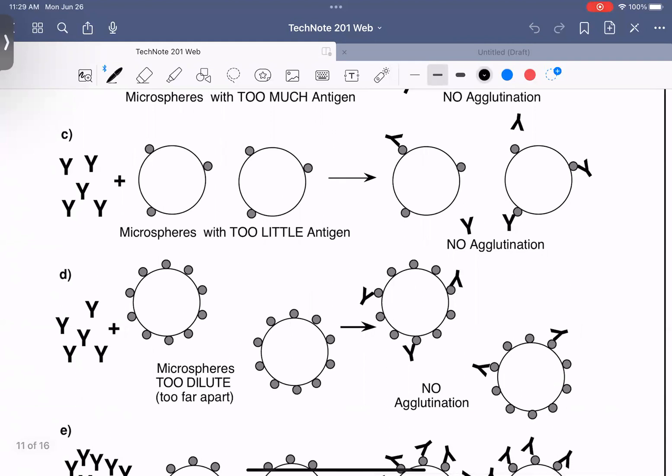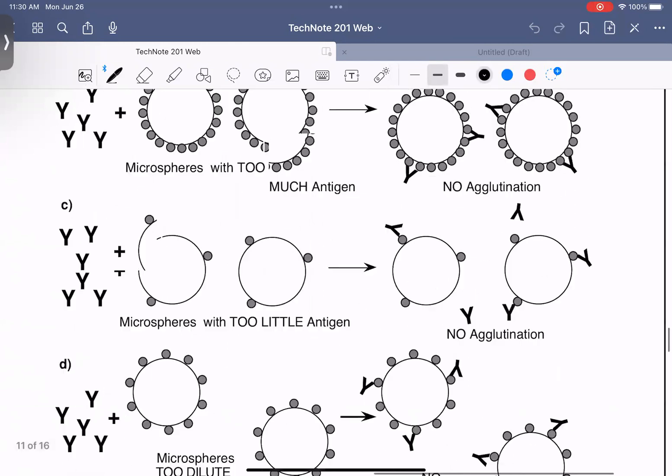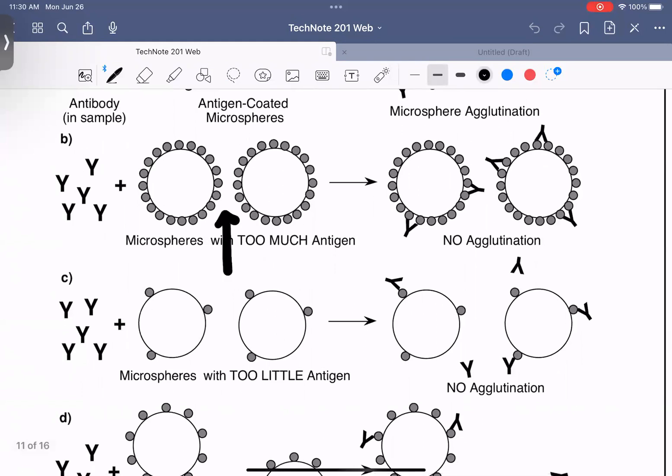Situation C, microspheres with too little antigen. So this is just where there's not enough binding sites to create that bridging effect. So as you can see, these are both irrespective of the amount of target in your sample. These are purely about how much you're adding.